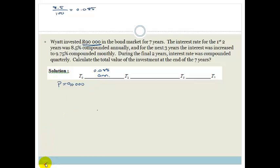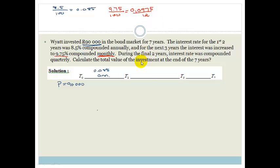During the next 3 years, the interest was increased to 9.75%, compounded monthly. So the interest rate is 9.75 divided by 100, which becomes 0.0975. Because it's compounded monthly, we divide by 12, so the interest is 0.0975 divided by 12. The number of payments N is 3 years times 12, which gives us 36.